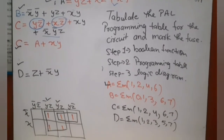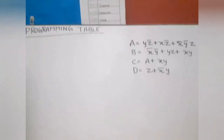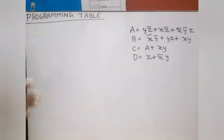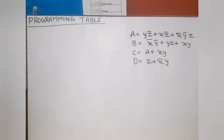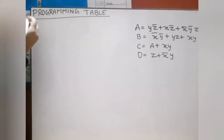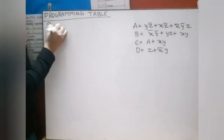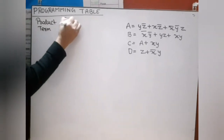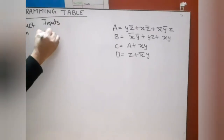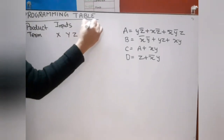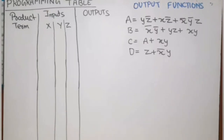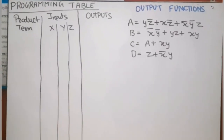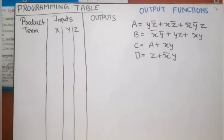Now I will tabulate the programming table for the given functions. The table has columns: product term, inputs x, y, z, and outputs A, B, C, D. For a variable present in true form we put 1, for complement form we put 0, and for an absent variable we put a dash. The first three product terms belong to function A: yz̄ is written as dash, 1, 0; xz̄ is written as 1, dash, 0; and x̄ȳz is written as 0, 0, 1.